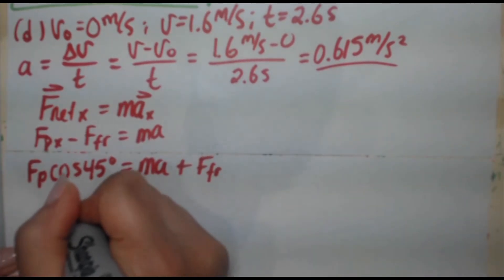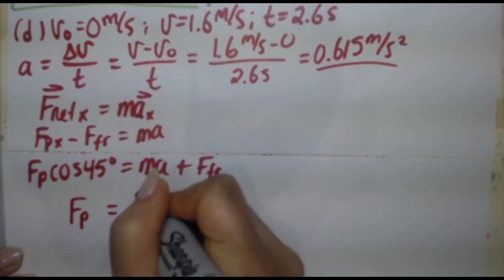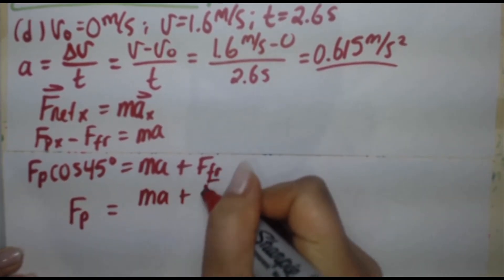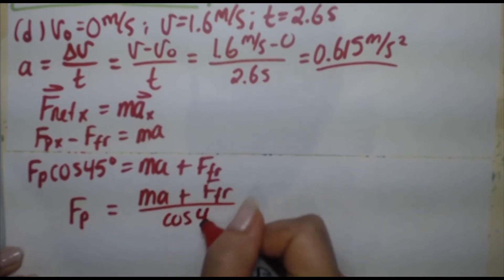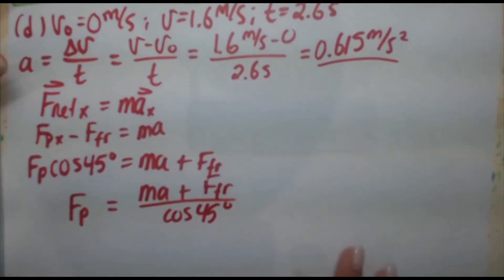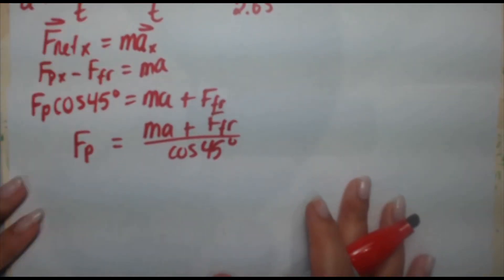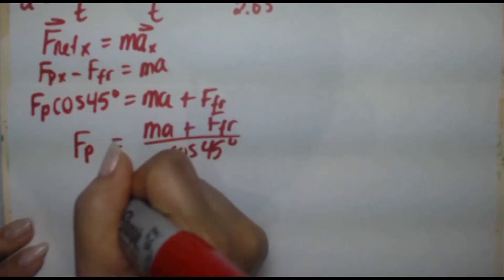So let's rearrange this for FP because we want to know the new force they have to push on. MA plus FFR divided by cosine 45 degrees.